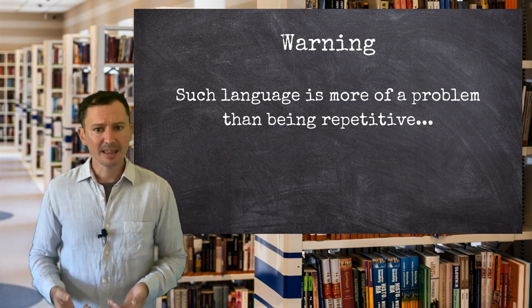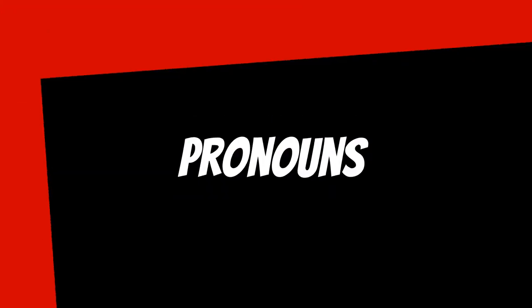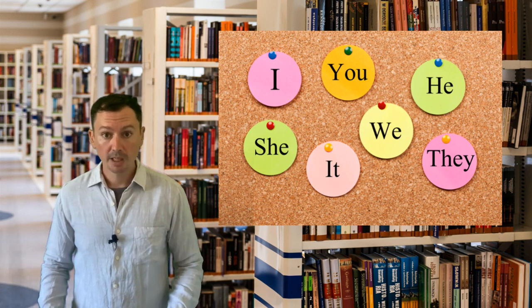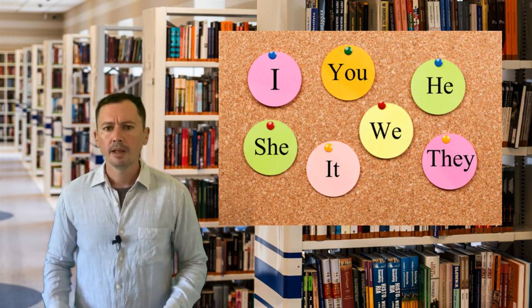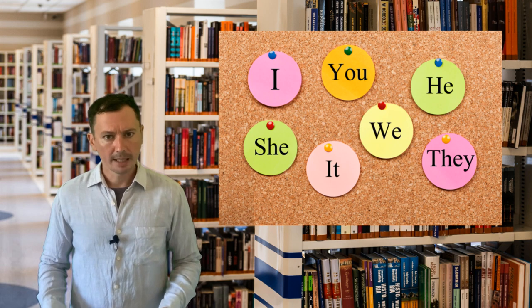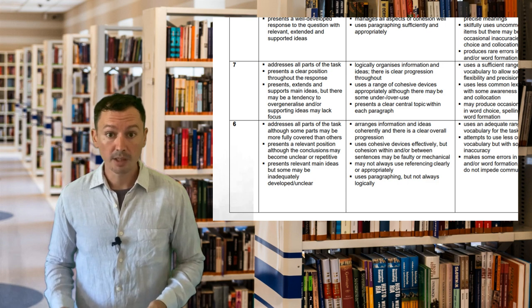So in cases like that, what else can we do? Well, there are always pronouns. Pronouns are words like he, she, it, they, and so on. These replace nouns in a sentence, and they are very important when it comes to your score for coherence and cohesion.